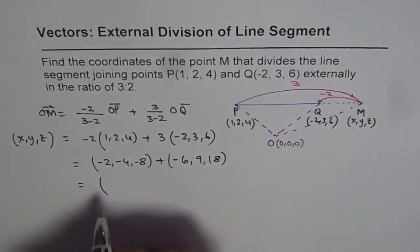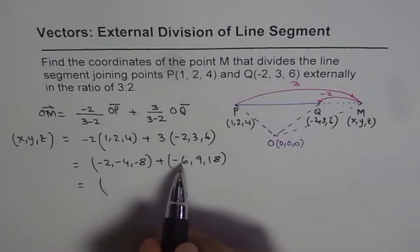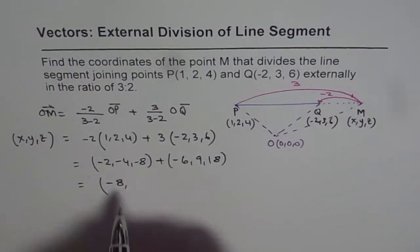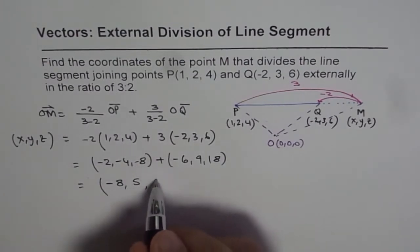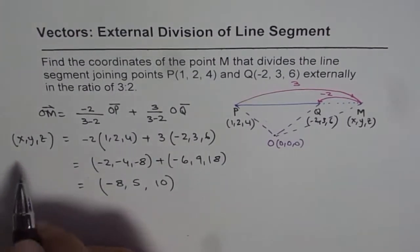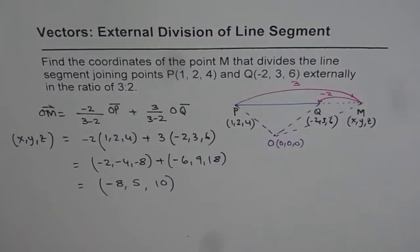This gives us (x, y, z) as (-2 + -6 = -8, -4 + 9 = 5, -8 + 18 = 10). Those are the coordinates for M.